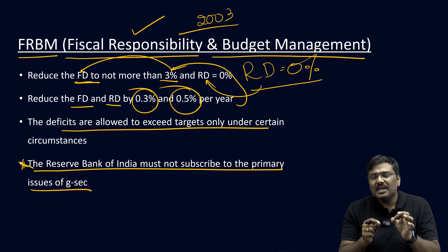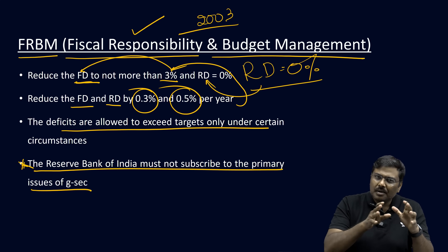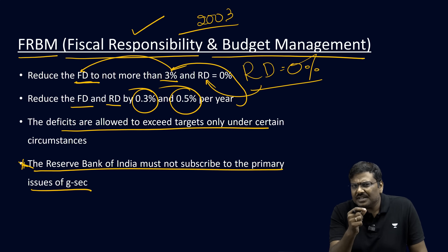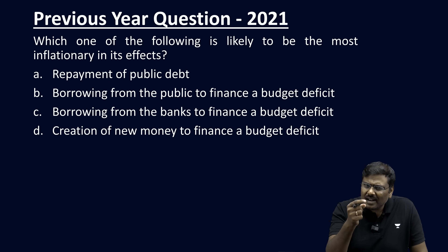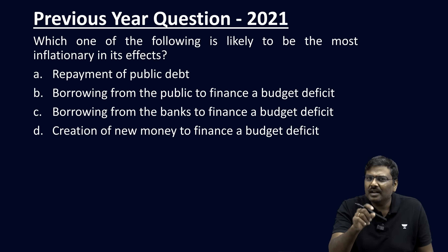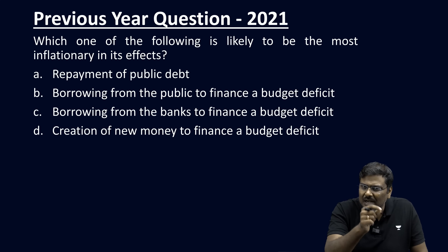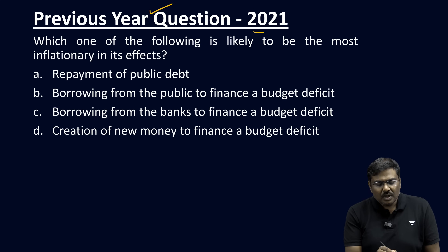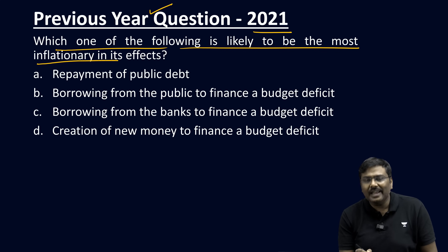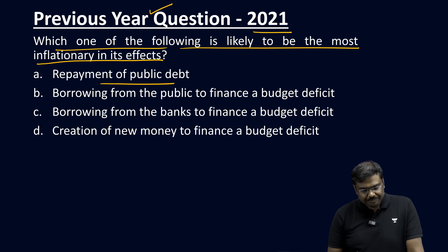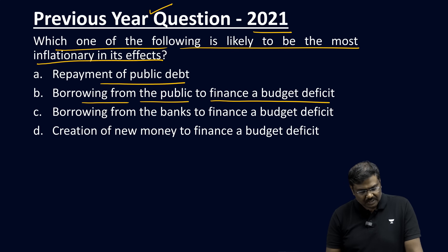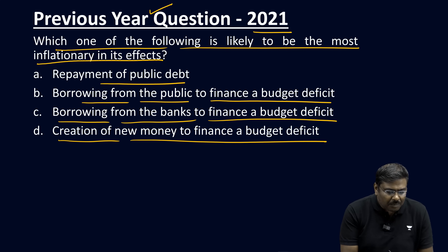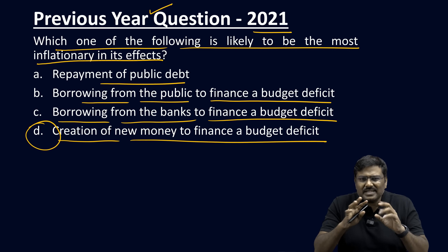These are important concepts associated with budgeting and its impact on the economy. Let us analyze certain previous year exam questions to understand that the chapter on budgeting is very important for both prelims and mains. A question asked in 2021: 'Which one of the following is likely to be the most inflationary in effect?' Options: repayment of public debt; borrowing from the public to finance a budget deficit; borrowing from banks to finance a budget deficit; creation of new money to finance a budget deficit. The correct answer is creation of new money.